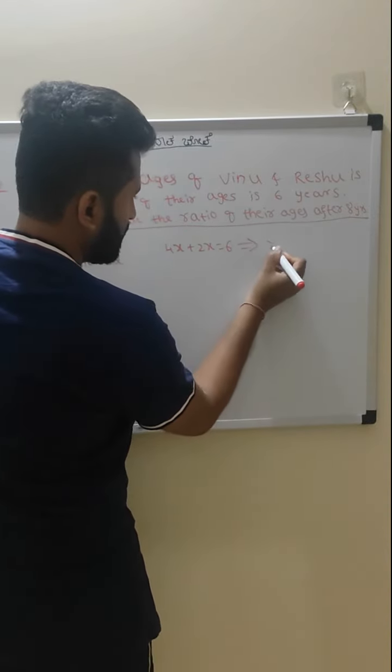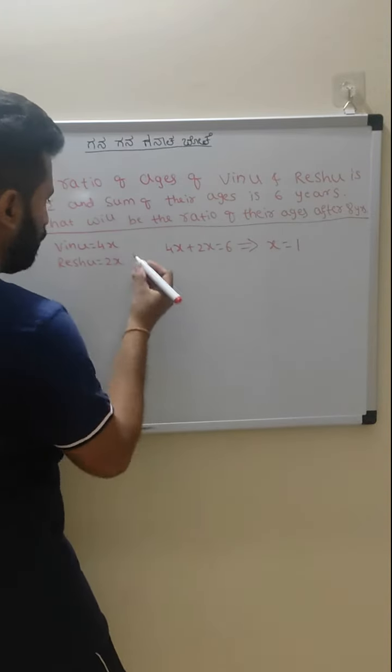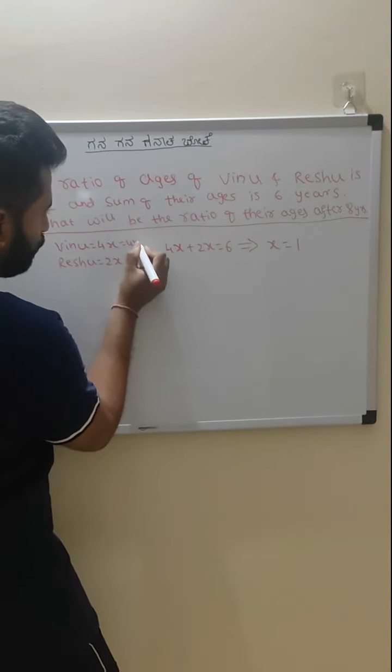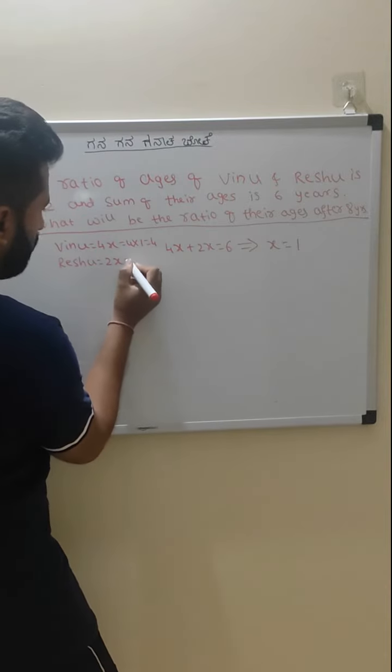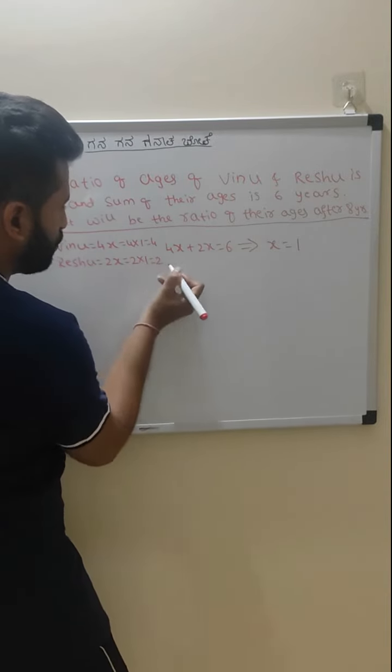With this we can find x here. x will be 1. Vinu's age will be 4 into 1 that is 4 and Rasu's age will be 2 into 1 that is 2.